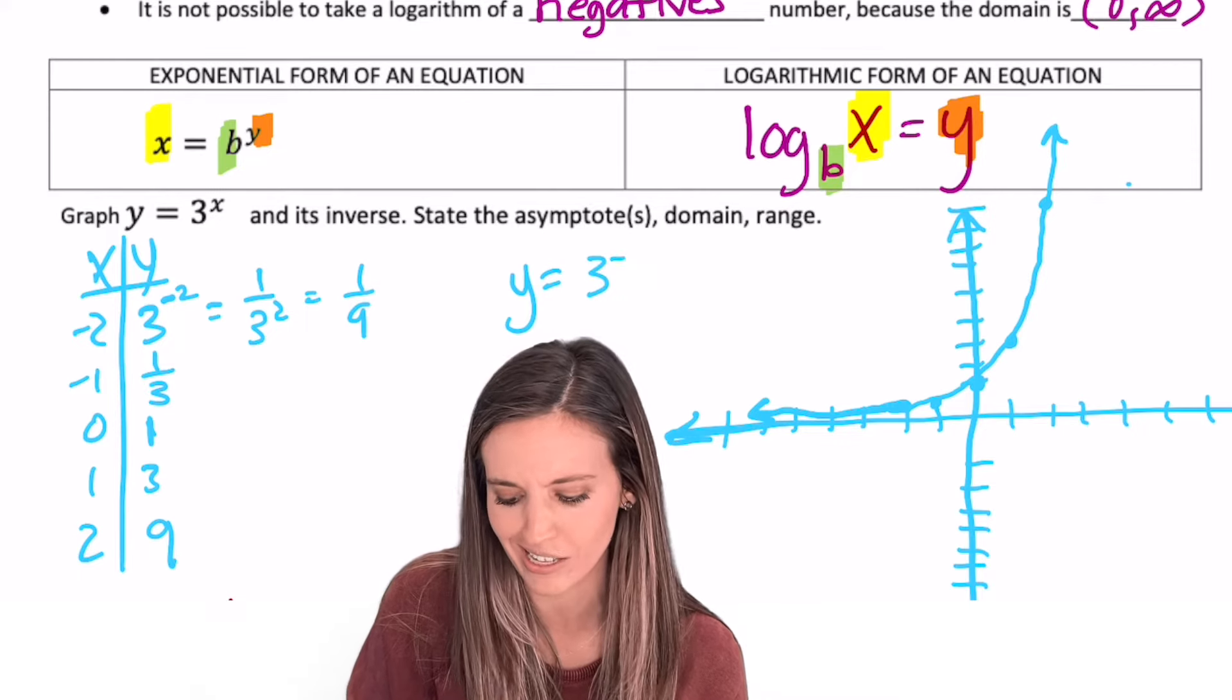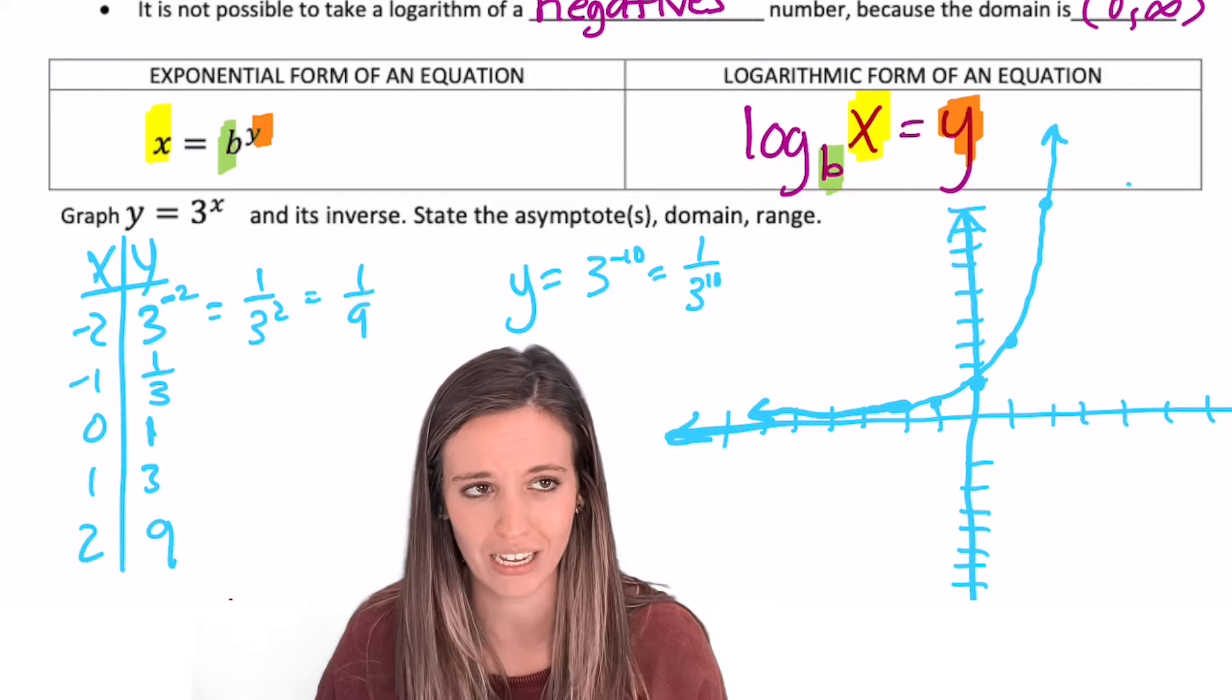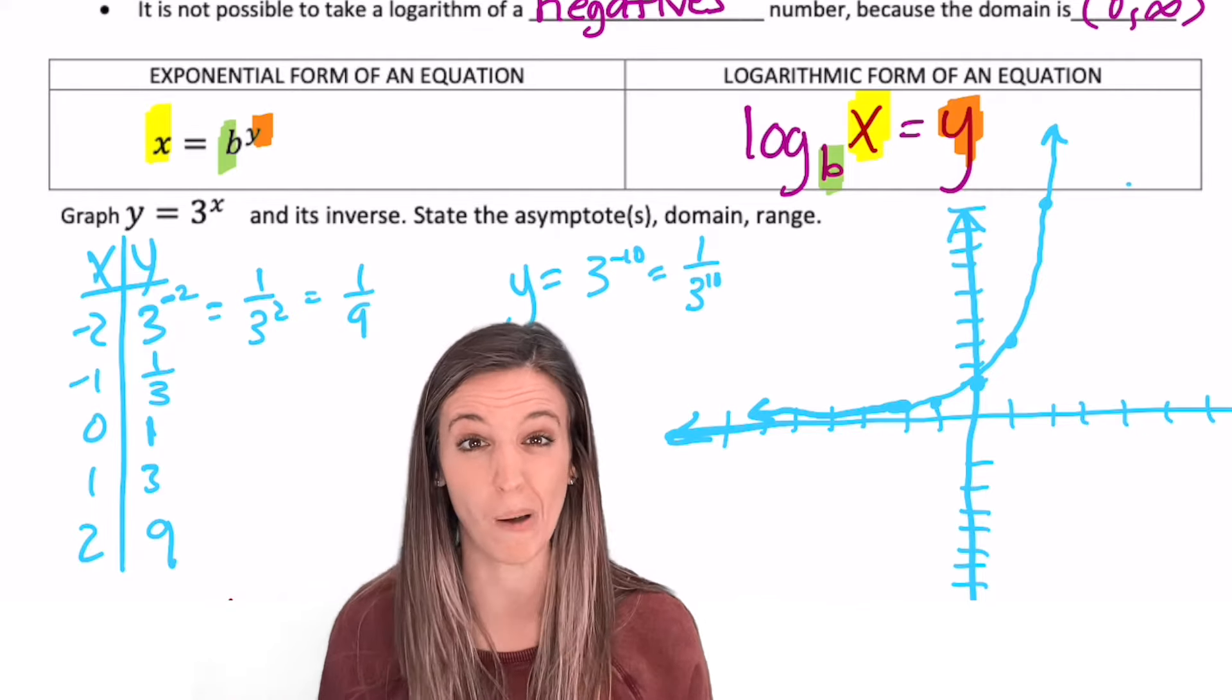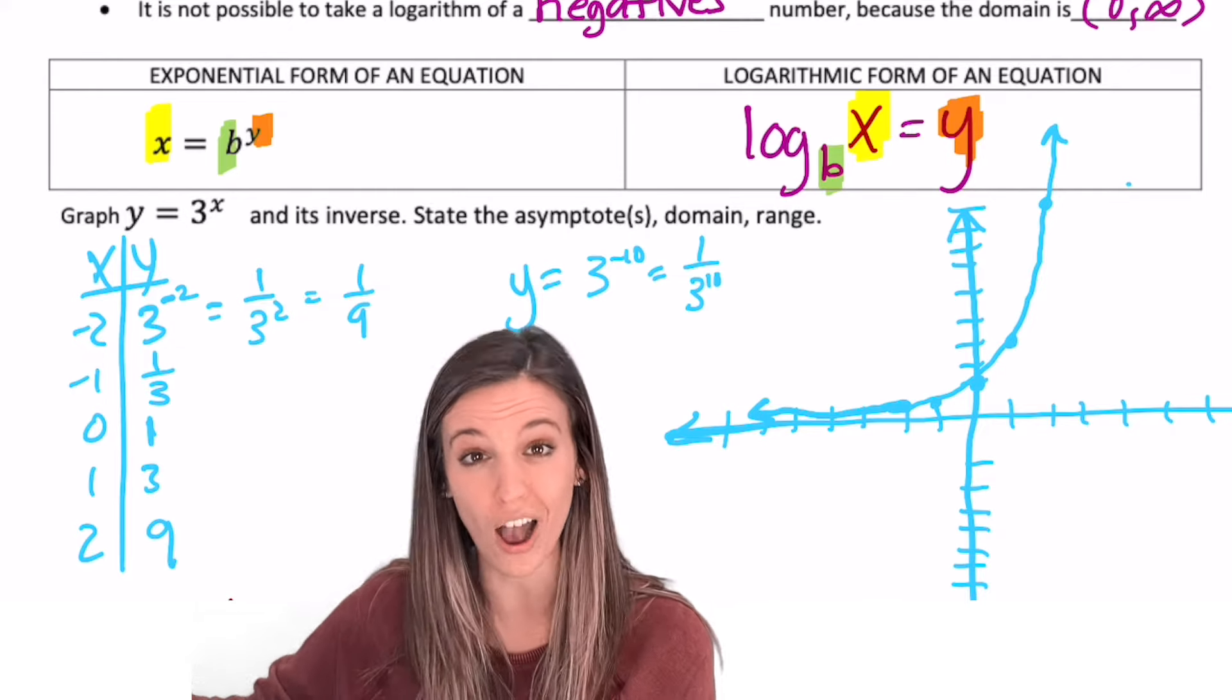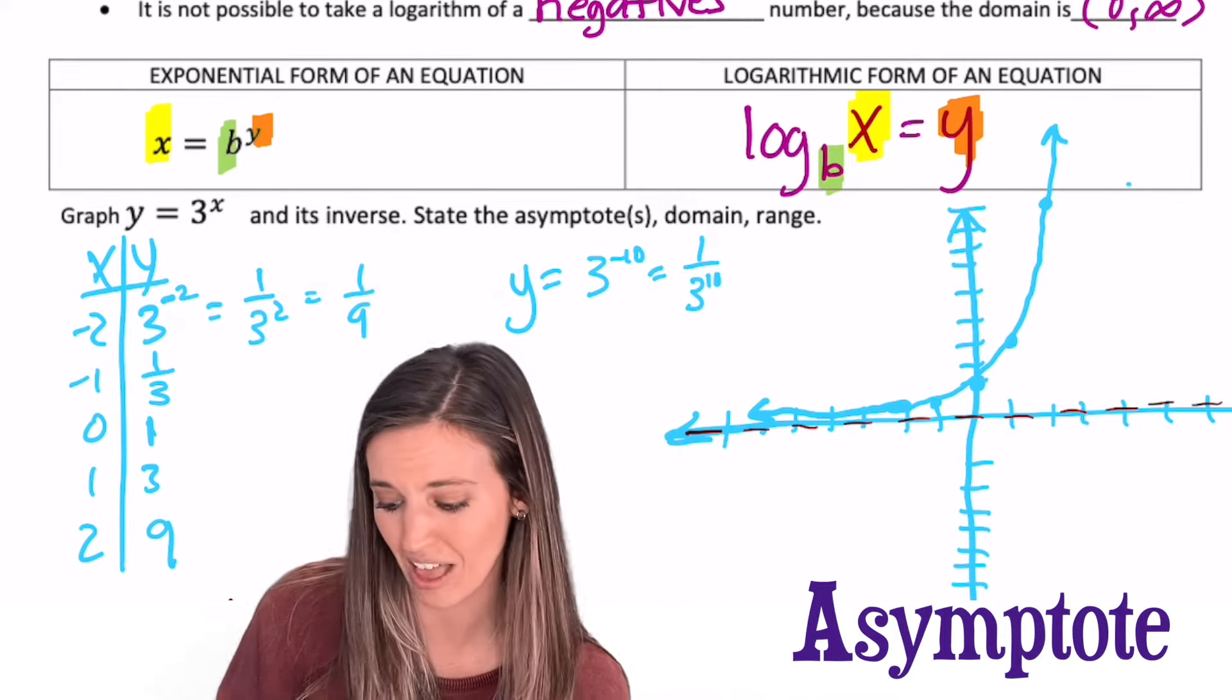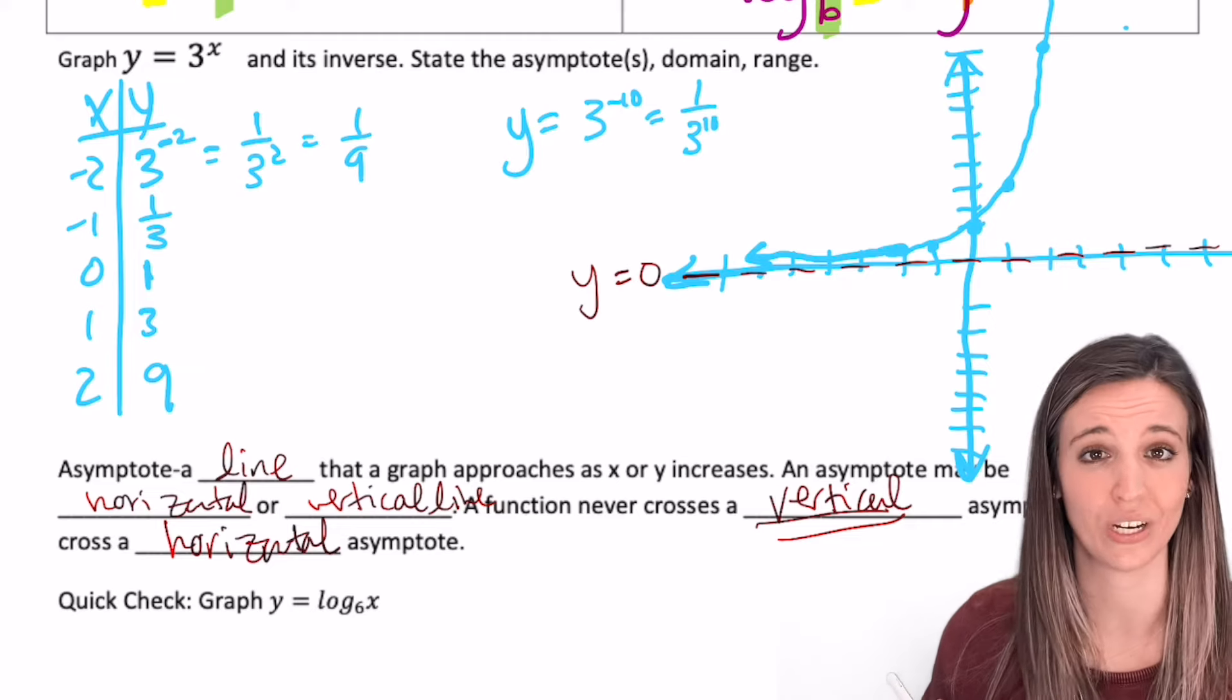What if I tried to plug in negative 10? So y equals 3 to the negative 10 is going to be, well, permission to move. 1 divided by 3 to the positive 10. Well, if I move further out negative 1, you know, like 3 to the negative 100, still 1 divided by 3 to the positive 100. So I'm going to stay positive. So since that graph's flattening out and approaching 0 but never crossing 0, we know that an asymptote forms here. An asymptote forms at the line y equals 0.